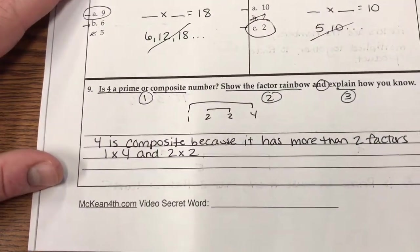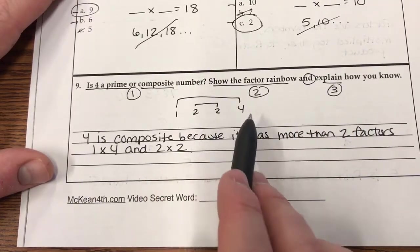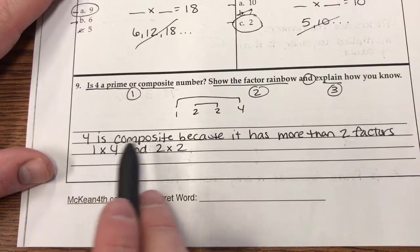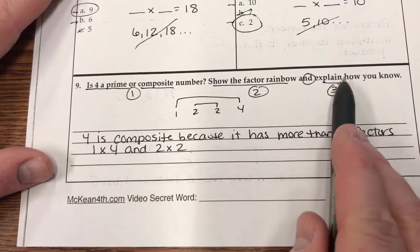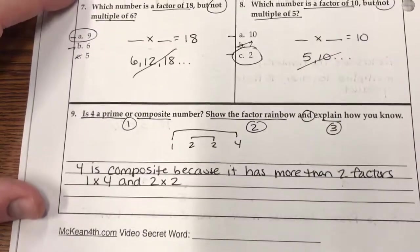All right? And then is 4 prime or composite? Show the factor rainbow and explain. There's my factor rainbow. 1 in that number. And then 2 times 2. So 4 is composite because, here's my explanation, it has more than two factors. 1 times 4 and 2 times 2.